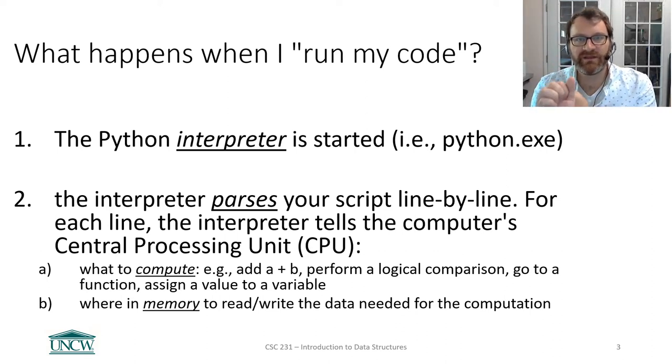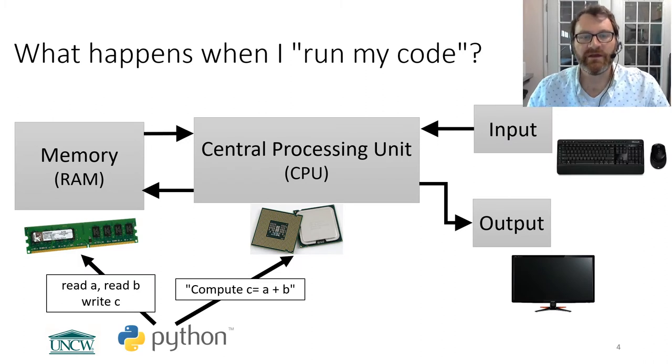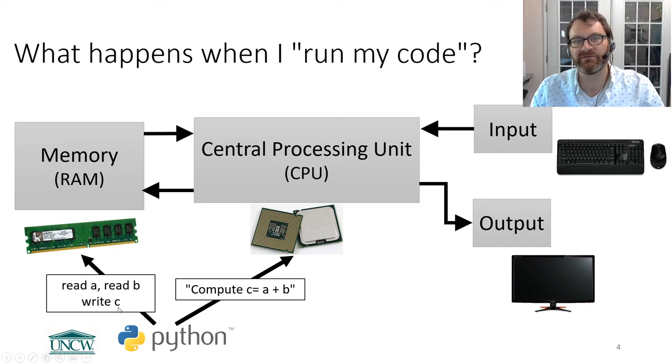The computation and the memory are kind of like physical instructions for the computer. So Python is a program. It's running, and it says, hey, CPU, go do this thing. Compute C equals A plus B. And it also tells the CPU where in memory it can find the values of A, B, and C. Where to put the value C. This is very important.